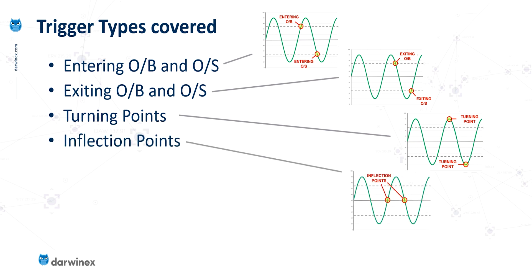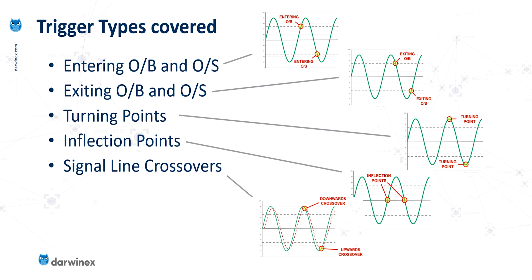The next were inflection points, where the gradient changes, giving us more information about the underlying price action. And finally, we looked at using a signal line in conjunction with the main line and how crossover points can give us the intelligence we need. This is often a good balance — reducing risk slightly compared to the turning point option, while getting us into the market earlier than waiting for the exit from overbought or oversold regions. But it must be backtested properly to know whether it suits your system.